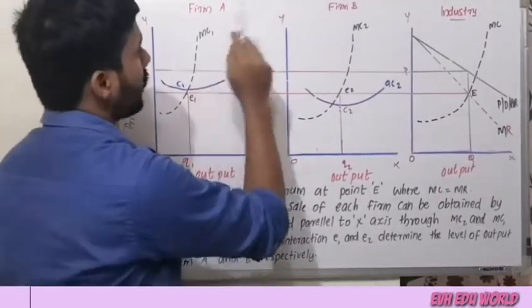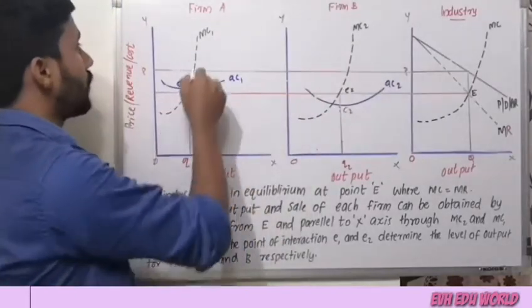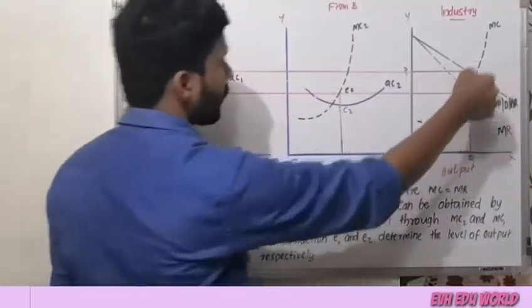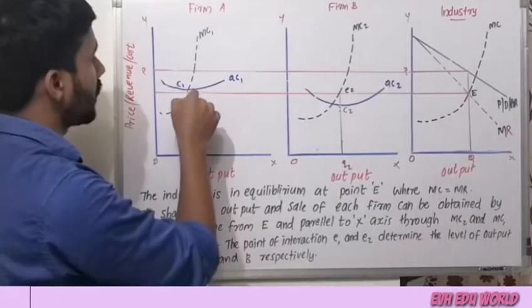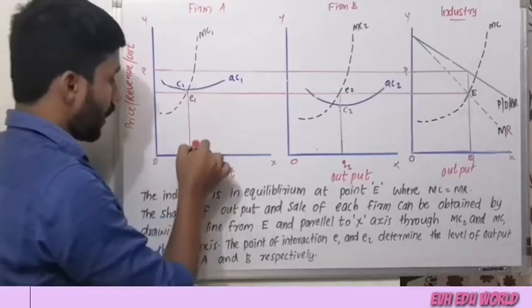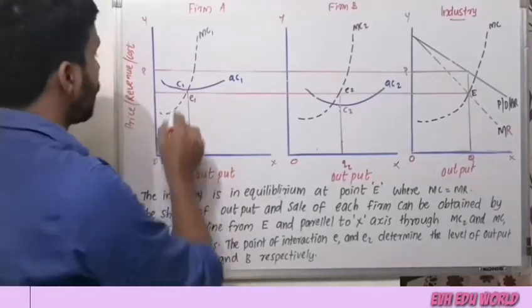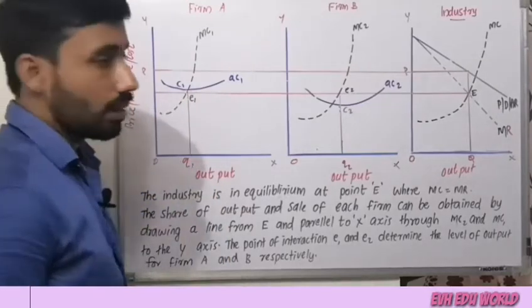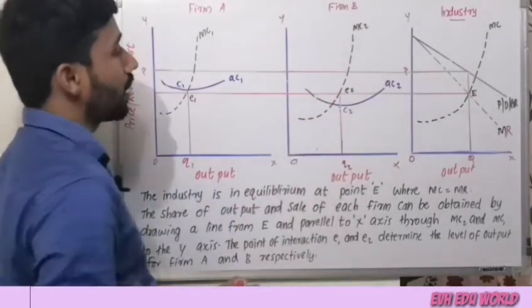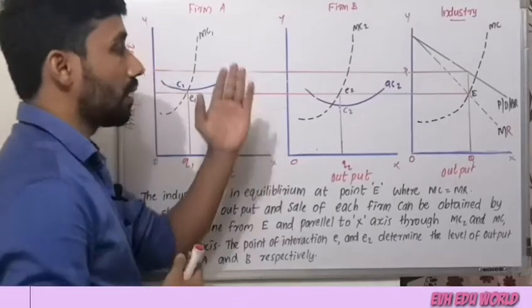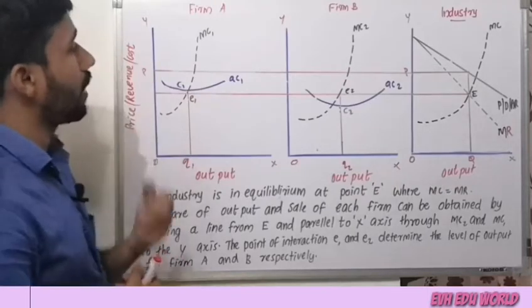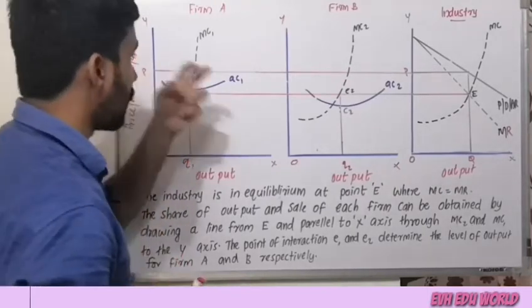We have the equilibrium point where MC1 and MC2 — the marginal cost curves for the two firms — intersect. In the industry, the equilibrium is where MC equals MR.